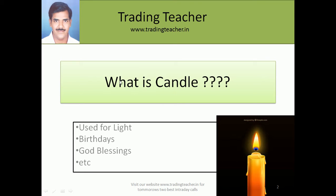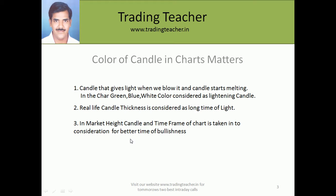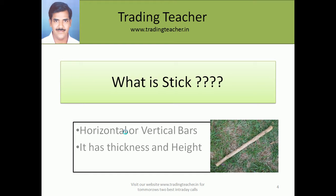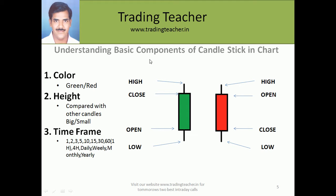In episode number 1 we studied about what is meant by a candle. A candle is used for generating light in our homes, offices, birthdays, and churches. We should take into consideration the green color and the red color of a candle. Time frame is a major important component — it matters a lot in charts. The color of the candle is also very important for taking trading decisions. There are 3 components: color, height, and time frame.